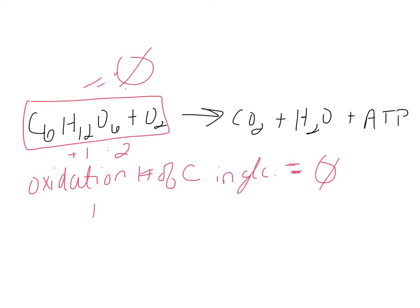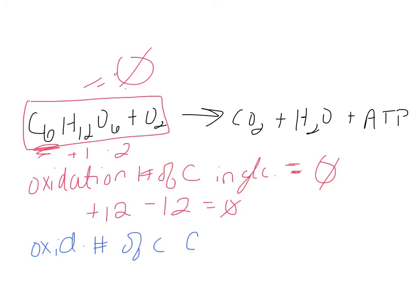Glycolysis is the beginning step of any kind of respiration, whether aerobic or anaerobic. 'Lysis' means to break apart, and here we're breaking glucose — which could be in the form of glycogen — into smaller pieces. We take this six-carbon glucose molecule and break it into two pyruvates, which are three-carbon molecules.